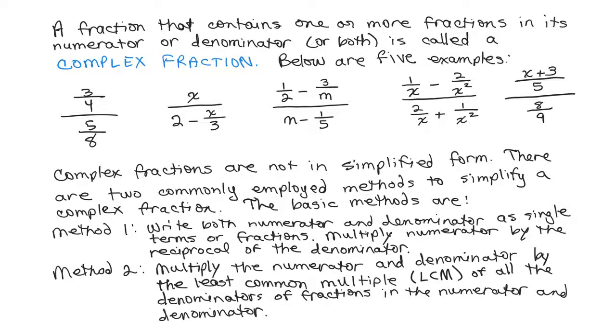If you look at the fourth example, 1 over X minus 2 over X squared in the numerator, there are two fractions in that numerator separated by a subtraction sign. So that's not a single fraction. And in method 2,